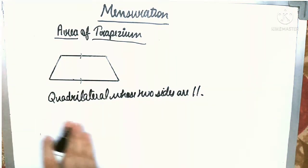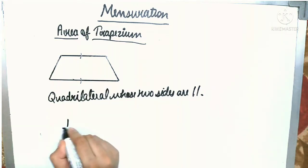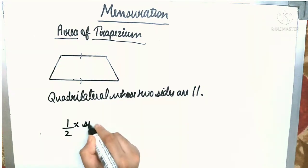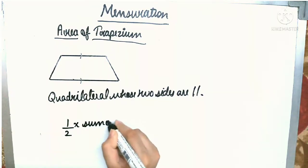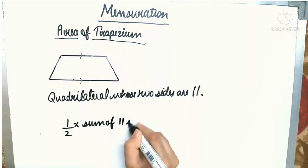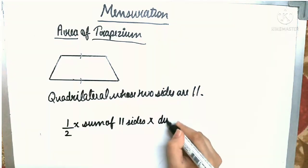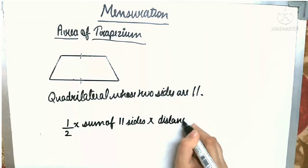What is the formula of area of trapezium? The formula of area of trapezium is half into sum of parallel sides into distance between them.